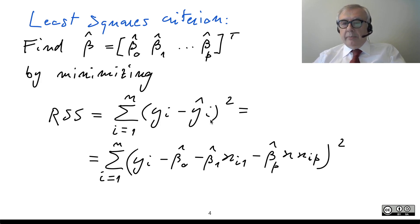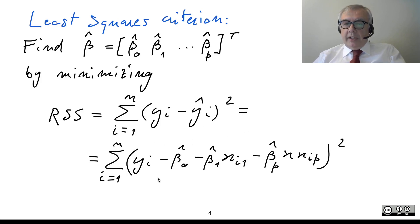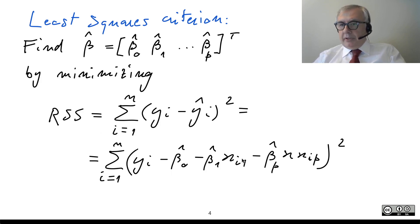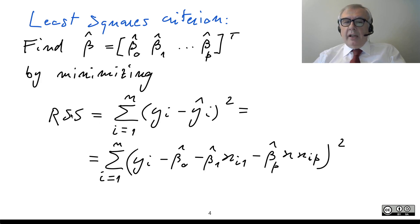If I plug in the expression of the predictor, I obtain this formula. The important thing is that RSS is actually a function of the P plus 1 beta parameters. So this is a minimization problem: you have to find the vector beta such that RSS is minimized.